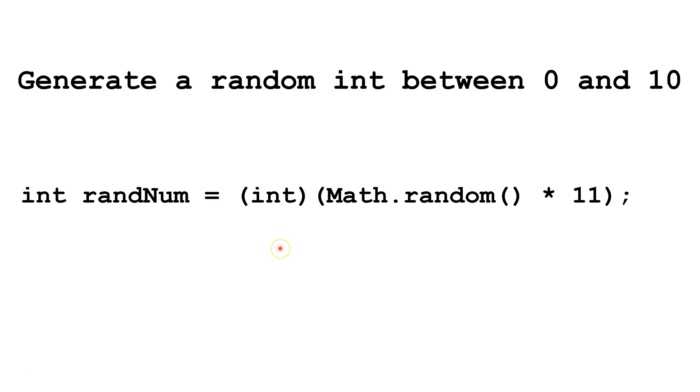Let's try this out and see how it would work. So the least value Math.random could return would be 0.0. If we multiplied 0.0 times 11, we would get 0.0. Then, we would cast 0.0 as an int, which would cut off everything after the decimal point, and leave 0.